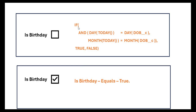The triggering condition: we will create a custom 'Is Birthday' field on the employee object using a formula field and checkbox. In that formula field we will use an IF function with an AND function containing two conditions. The first condition checks if the day of today equals the day of the date of birth of the particular employee. The second checks if the month of today equals the month of the date of birth. When both day and month match, the checkbox becomes true, which we use to trigger the flow.